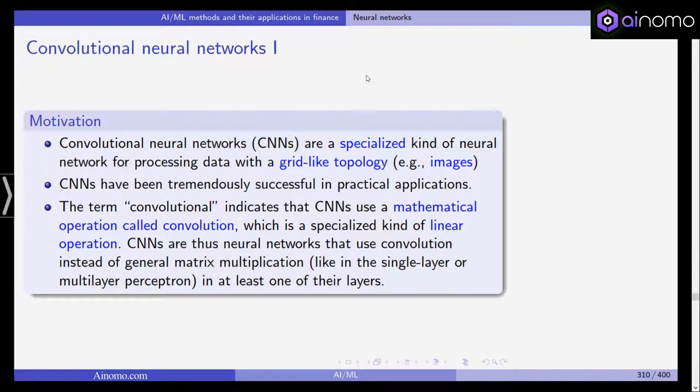This is frequently used in business and finance when looking at images, for example, to identify characters and numbers. It can be used for simple applications like reading receipts or other handwritten information into your computer. CNNs have been tremendously successful in practical applications. So let's have a look at these.